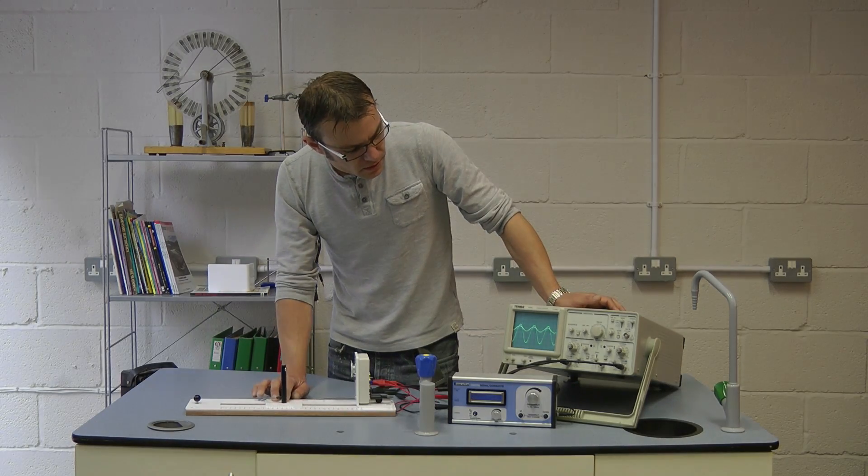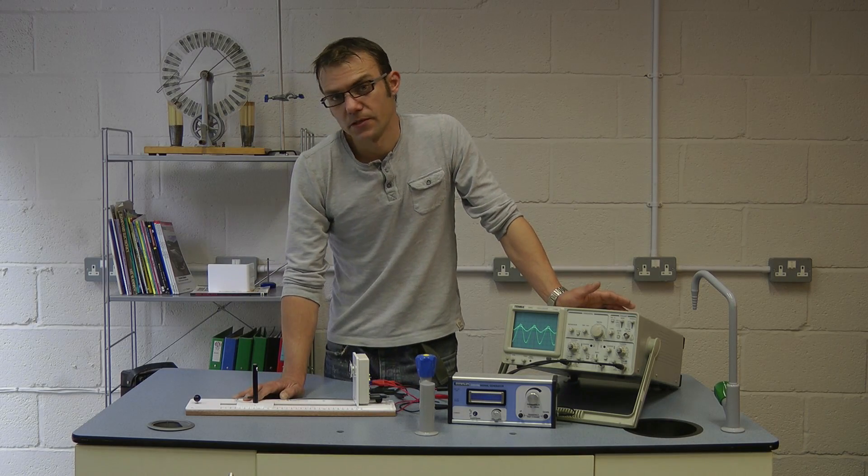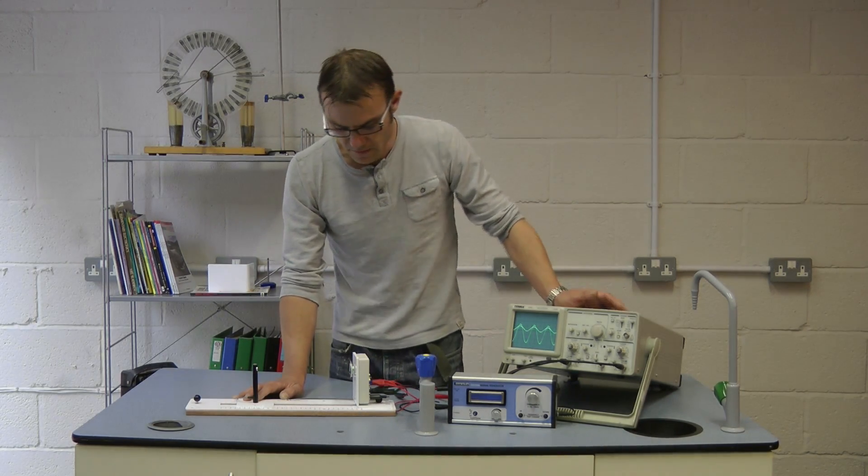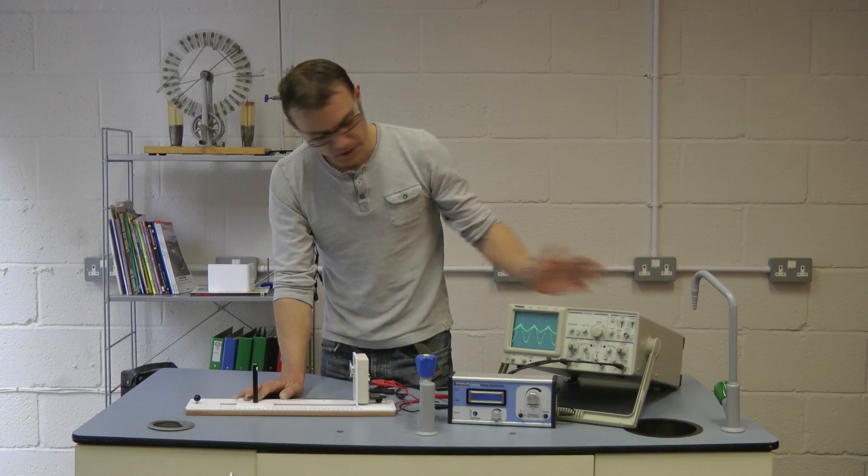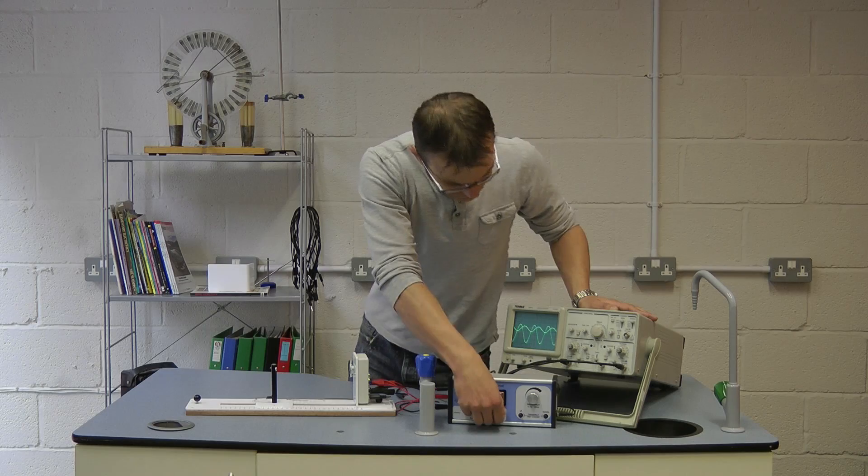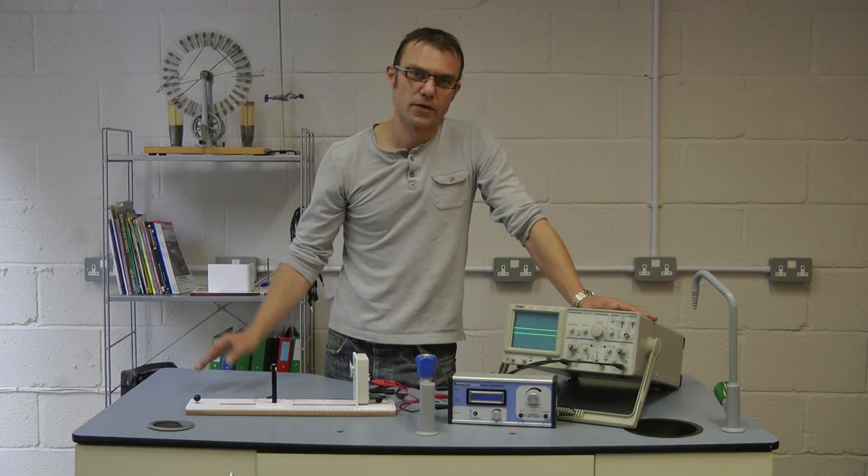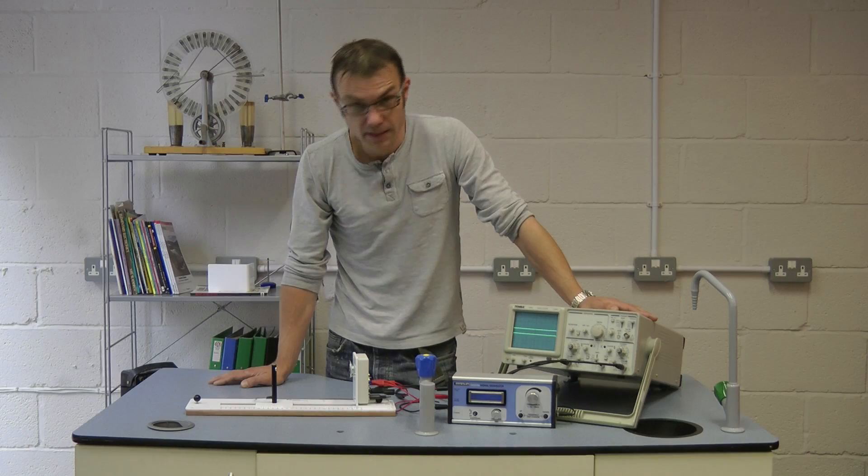You could measure the distance for two full wavelengths and divide by two. That's going to reduce your error in measuring lambda. But for single results just one wavelength will be fine. Once we've done that we've got a frequency here, we've got a wavelength. We can use the equation v equals f lambda and we can calculate the speed of sound in air.